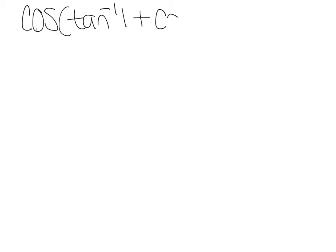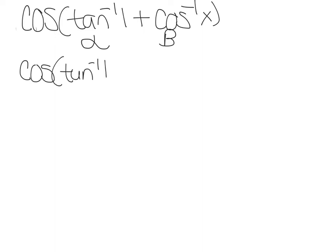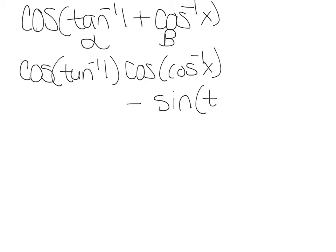So we have cosine — arctan just means tan to the negative 1 of 1 plus arc cosine of x. We're not going to freak out; this is just our alpha and our beta. I'm going to expand this formula: cosine of arctan of 1, cosine of arccos of x, and then that's going to be minus sine of arctan of 1, sine of arccos of x.